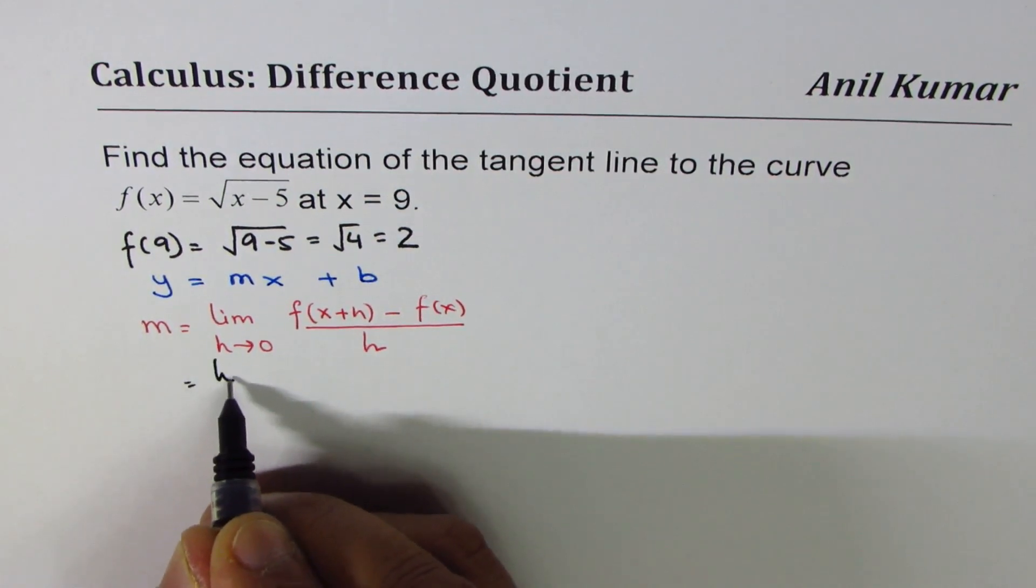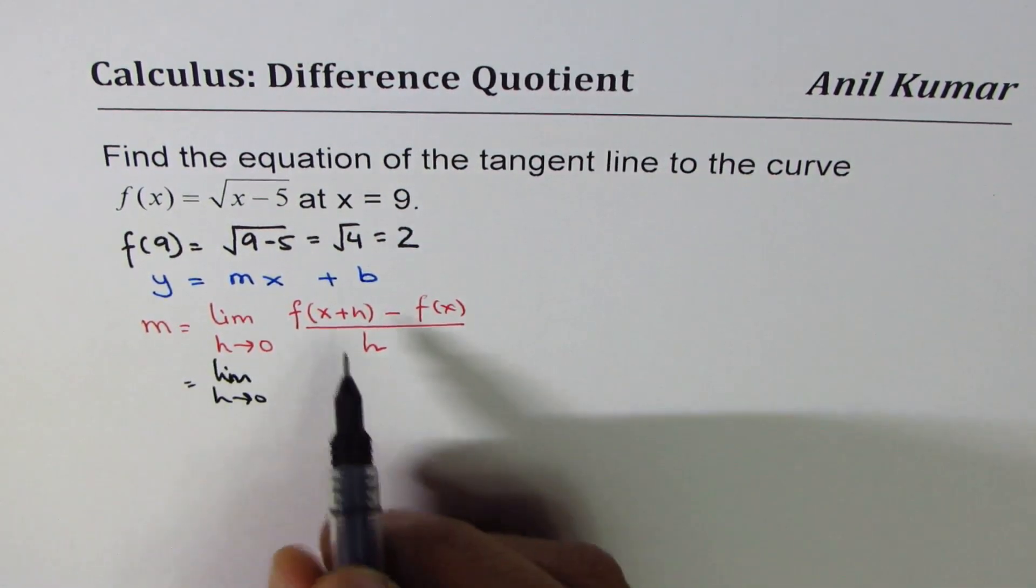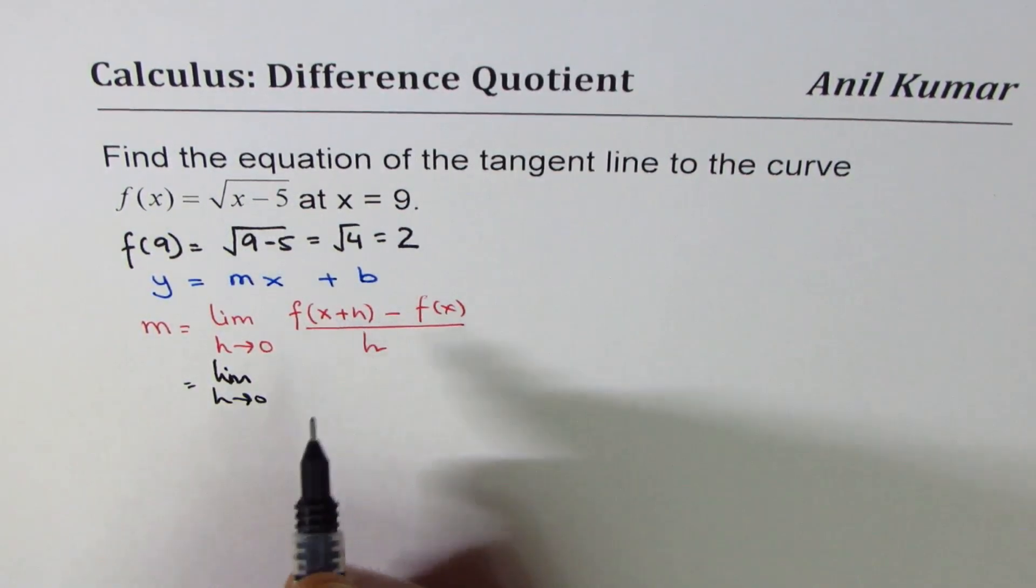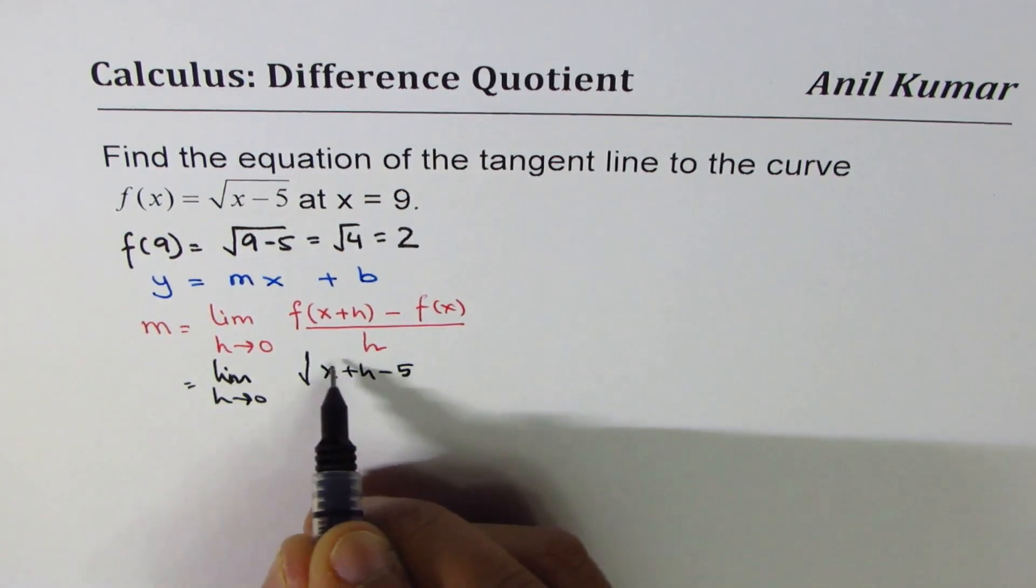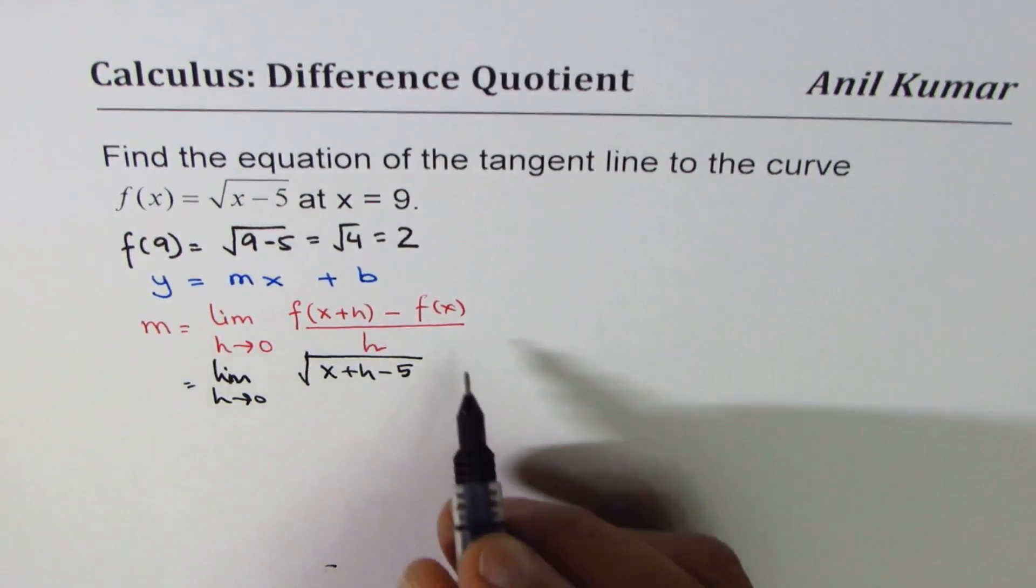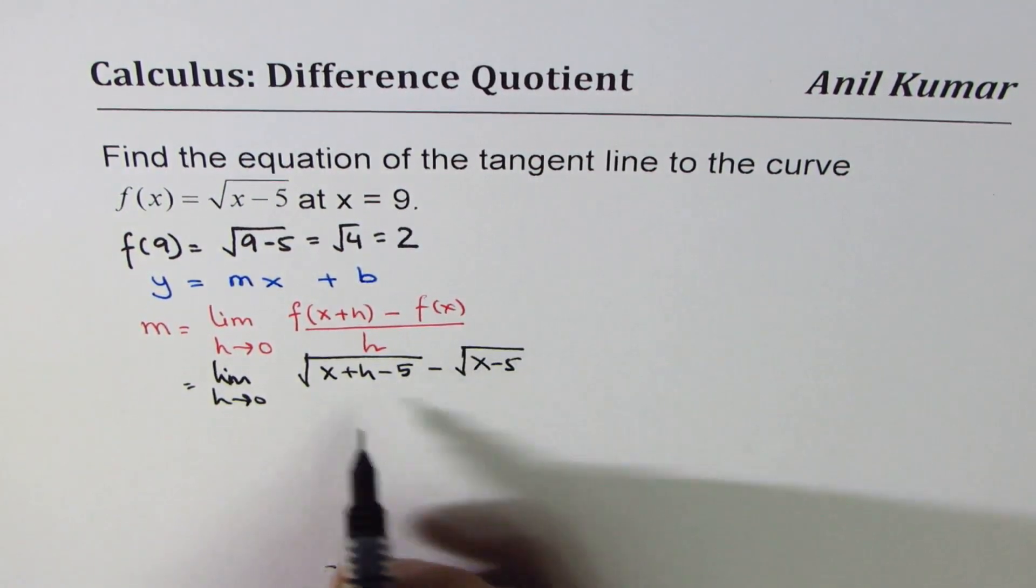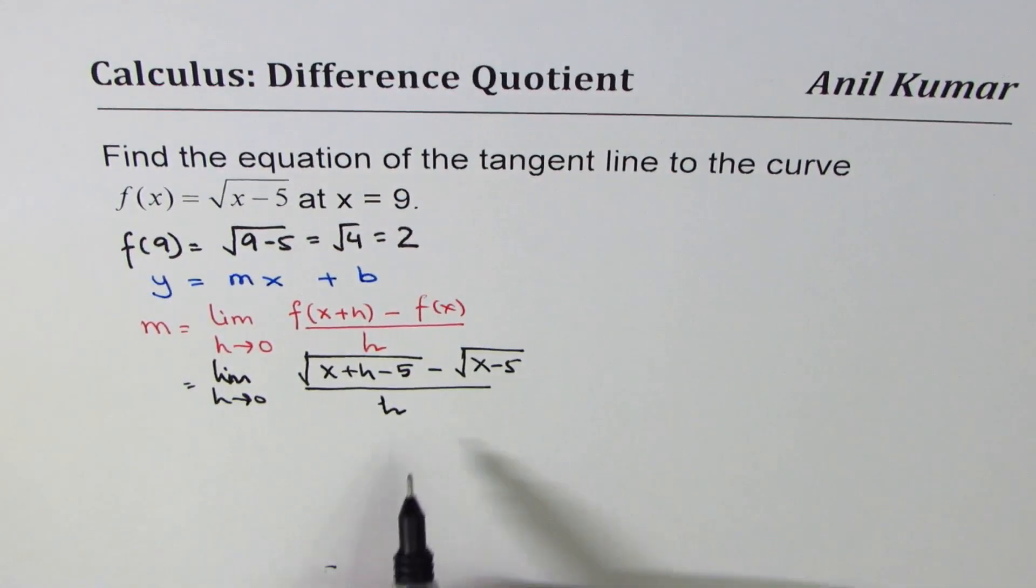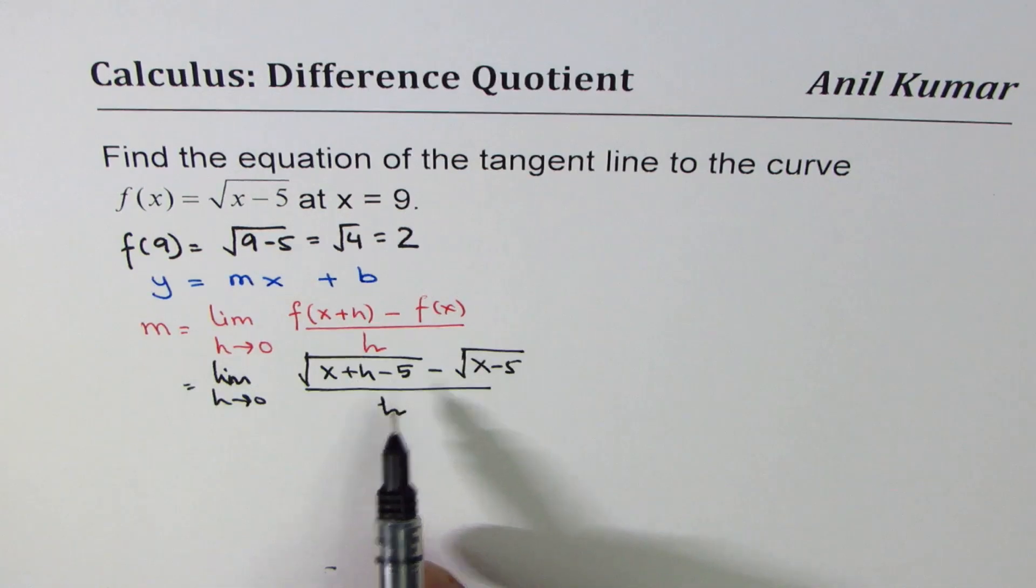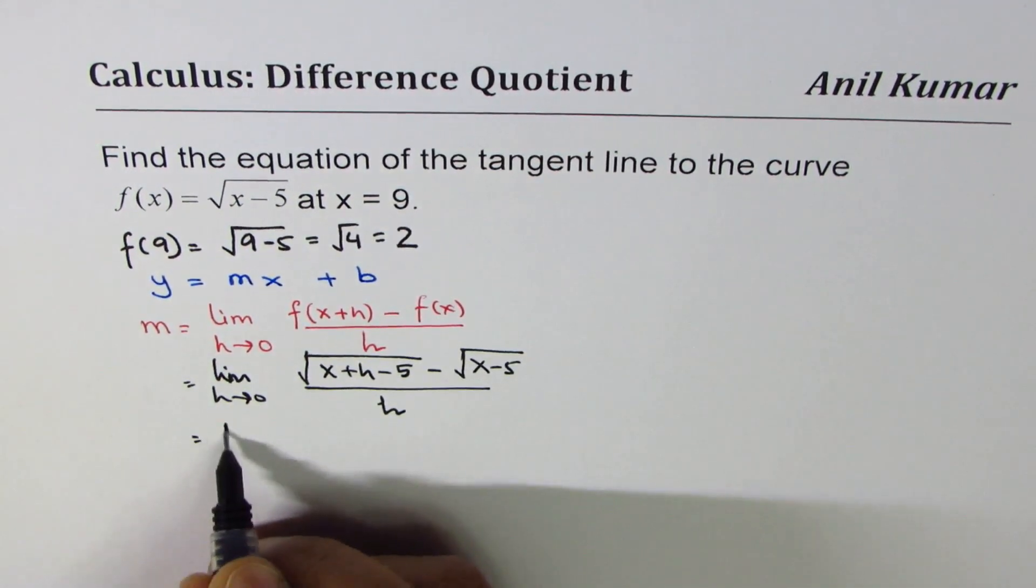So we'll find slope of this tangent. So in our case, we have limit h approaches 0. When I say x plus h, I have to replace x with x plus h, so we get square root of x plus h minus 5. That is the first function, minus f(x) means square root of x minus 5 divided by h. Whenever you have this kind of function which involves square root, to solve it further, we need to rationalize it.